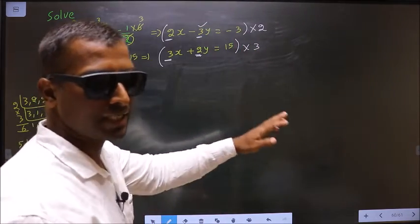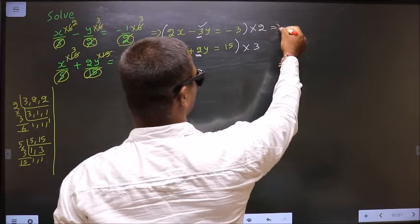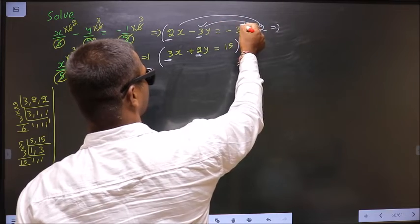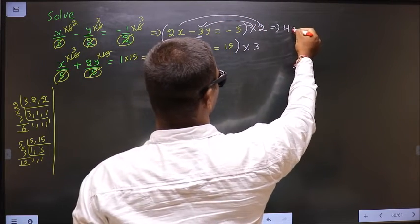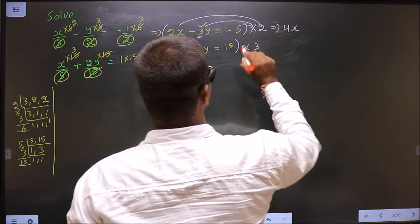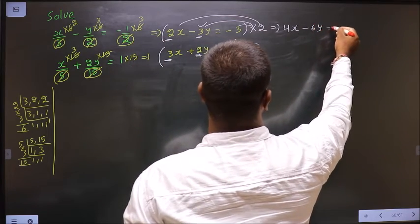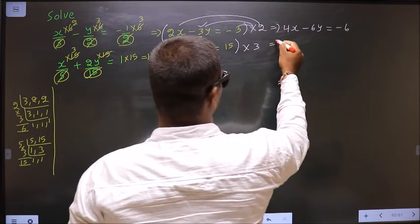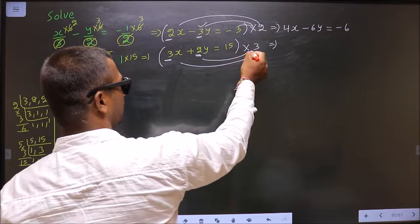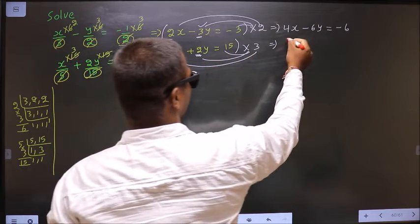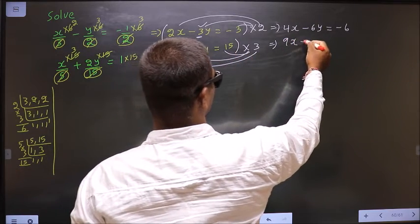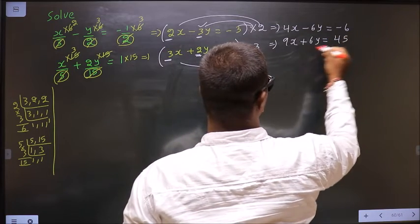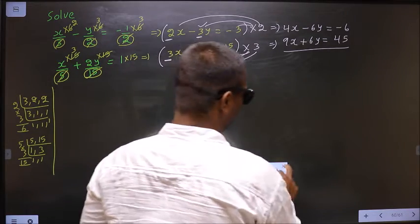Okay, let us multiply. And how do we multiply? We should multiply this to each term. So 2x into 2 is 4x minus 3y into 2 is minus 6y equal to minus 3 into 2 is minus 6. Now here also multiply to each term. So 3x into 3 is 9x plus 6y equal to 15 into 3 is 45.